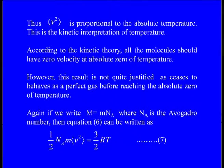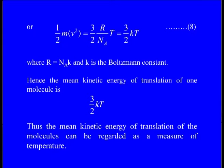Writing capital M = small m times Nₐ, where Nₐ is Avogadro's number, equation 6 can be written as half Nₐ·m times the average of V² equals 3/2 RT, where R/Nₐ = k, and k is Boltzmann's constant. Finally, we get the equation: half m times the average of V² equals 3/2 kT.